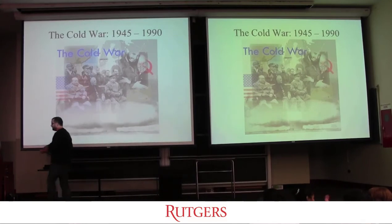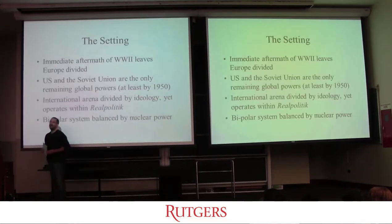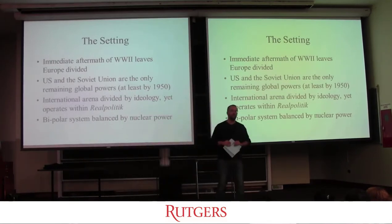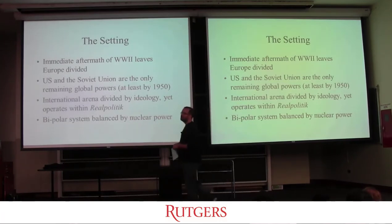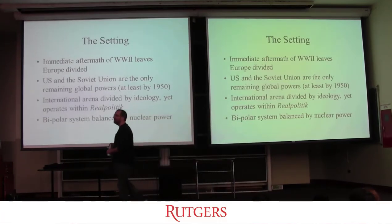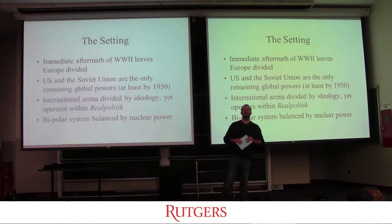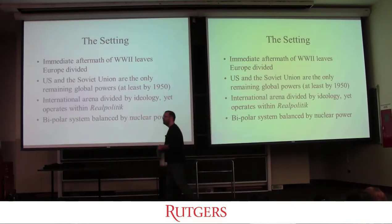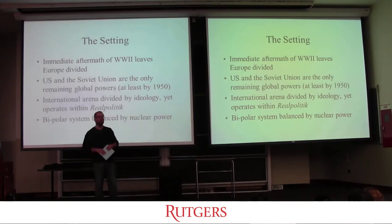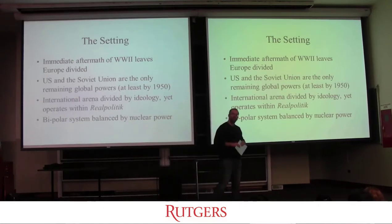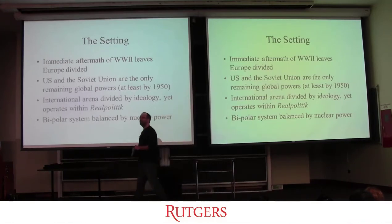It stands to reason that we look at the origins of all this and examine the setting. Here we are, May/June 1945 — the Second World War has come to an end in Europe and is becoming a definitive end in the Pacific. Europe is now divided between two conquering powers: the United States coming in from the west, and the Soviet Union marching in from the east. Both sides meet in Germany, and for the next 45 years, Europe is divided between two spheres of influence.